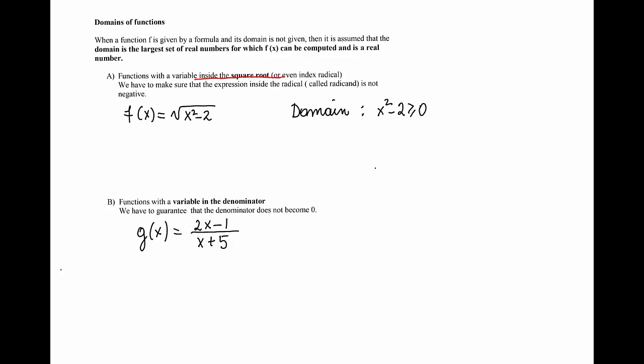In the case where a function contains a variable in the denominator, we have to guarantee that the x's used do not make the denominator 0. So here the denominator is x plus 5. We have to guarantee that this one is not 0.